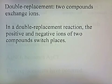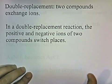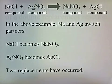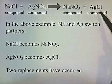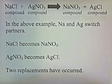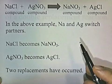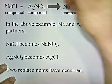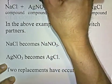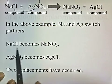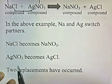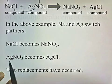Double replacement: two compounds exchange ions. The positive and negative ions of two compounds switch places. Here's an example: NaCl, which is a compound, reacts with silver nitrate, which is a compound, and it produces sodium nitrate and silver chloride. Sodium and silver switch partners — sodium pairs up with the nitrate, and chlorine pairs up with the silver. So NaCl becomes NaNO3, and AgNO3 switches and becomes AgCl.